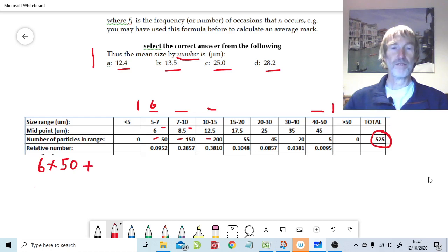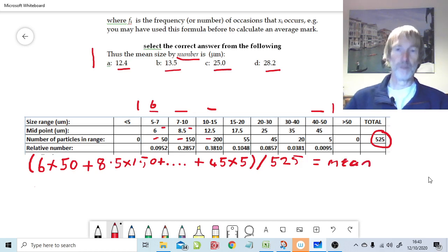And then we could add to that, from the next range, 8.5 because that's the midpoint, number of particles 150. This is much like how you'd calculate an average if you were calculating an average of exam results, the number of students getting each grade. So we're going up to midpoint 45 microns times by 5 particles. And if we were to sum that lot together and divide by 525, that would give us the mean by number.